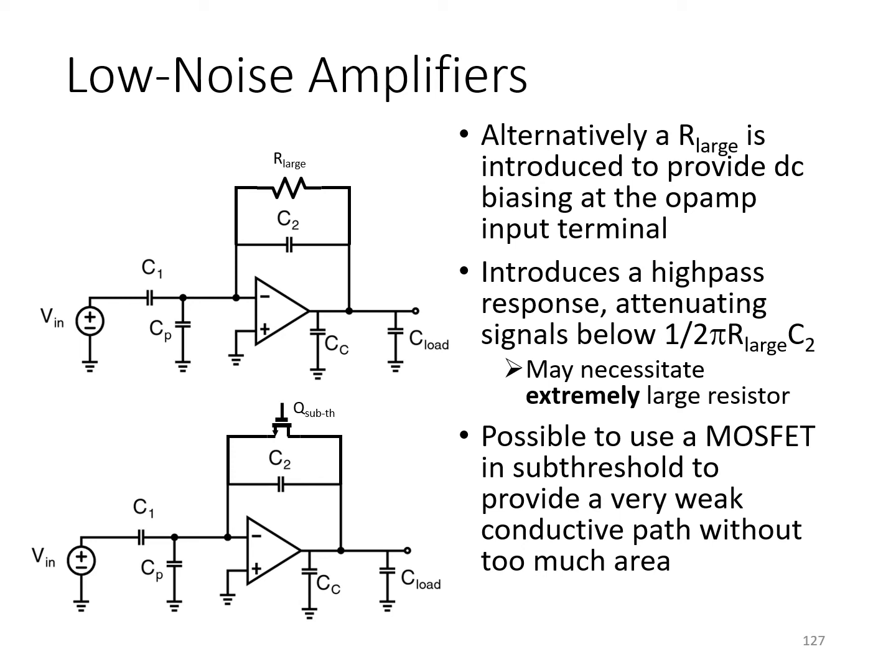When a switch capacitor implementation isn't possible, another solution to the DC biasing problem is to introduce a very large value resistance here in parallel with the feedback capacitor, C2. This provides a DC path from the op-amp output to its negative input terminal, through which current can flow to establish an initial DC operating point around the virtual ground of the op-amp.